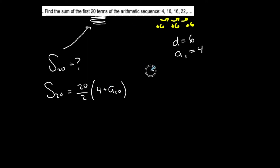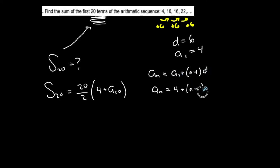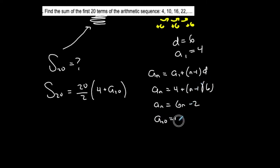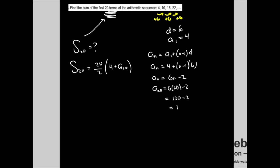To find the 20th term, I use the nth term formula: an = a1 + (n−1)×d. So an = a1 + (n−1)×6. Distributing and combining like terms gives 6n + (4−6), which is 6n − 2. So the 20th term is 6 times 20 minus 2, or 120 minus 2, which equals 118. This is a20.